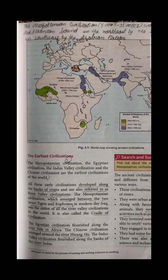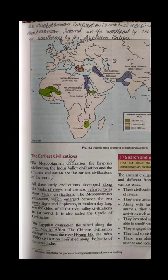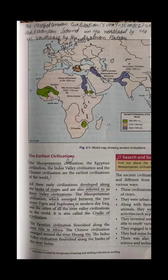The chapter name is Indus Valley Civilization, but it was not the only civilization traced down by historians. Other civilizations were also there. The names of those civilizations are: first, the Mesopotamian Civilization; second, the Egyptian Civilization; third, the Indus Valley Civilization; and fourth, the Chinese Civilization.